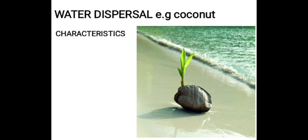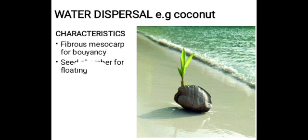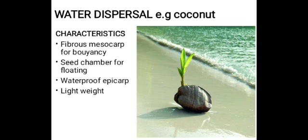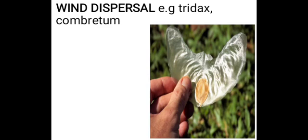A very good example of a fruit dispersed by water is the coconut. It has the following characteristics: number one, fibrous mesocarp for buoyancy; number two, a seed chamber for floating; number three, waterproof epicarp — the epicarp is the outer part of the pericarp, which is the outer covering of the fruit. They also have a light weight to enable them to float on water.